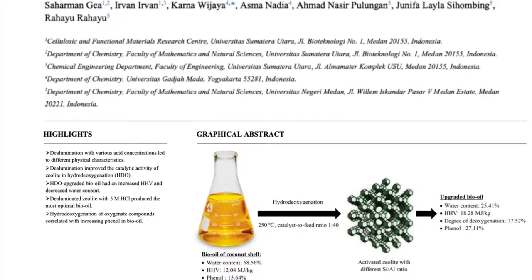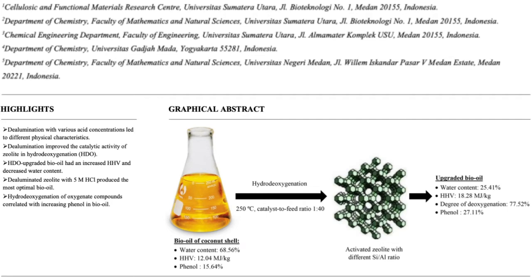They used activated natural zeolite as an HDO catalyst whose acidity level varied depending on the silicon to aluminum ratio after dealumination with 3, 5, and 7 molar hydrochloric acid. The Z5 catalyst showed the best catalytic performance in the HDO process of bio-oil and led to promising improvements.